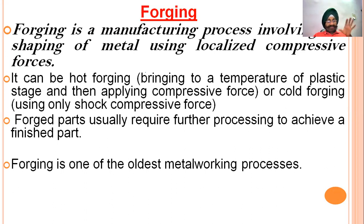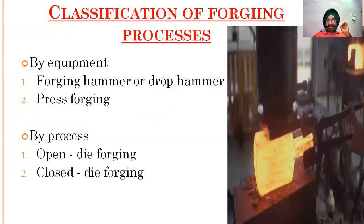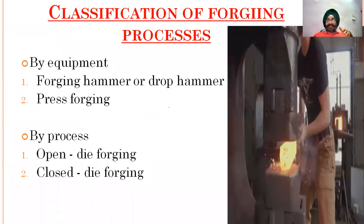Forge parts require further processing to achieve a finished part — finishing such as machining, deburring, or super finishing process. It is one of the oldest metal working processes and was performed by a smith using a hammer and anvil, working on hot metal.